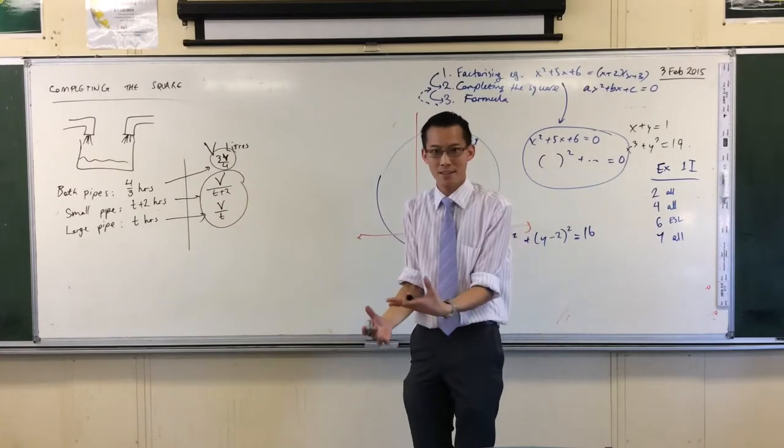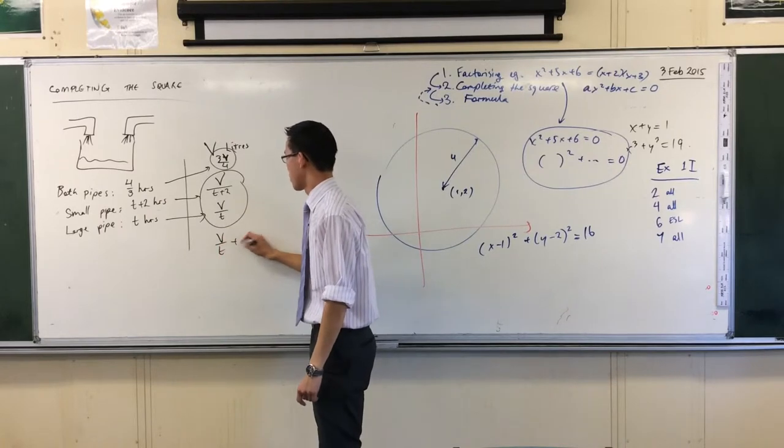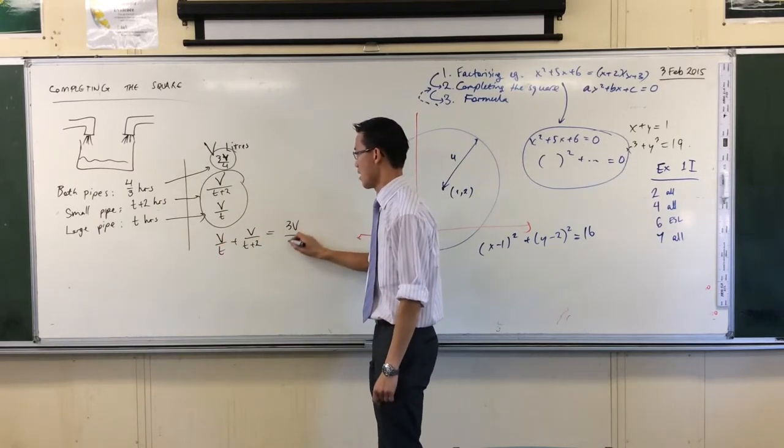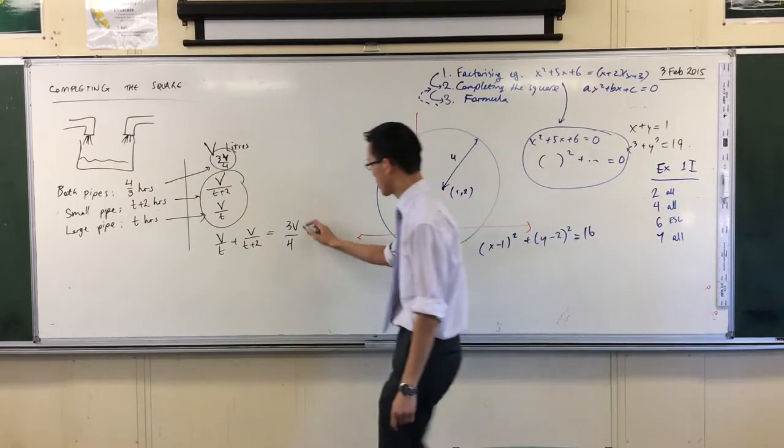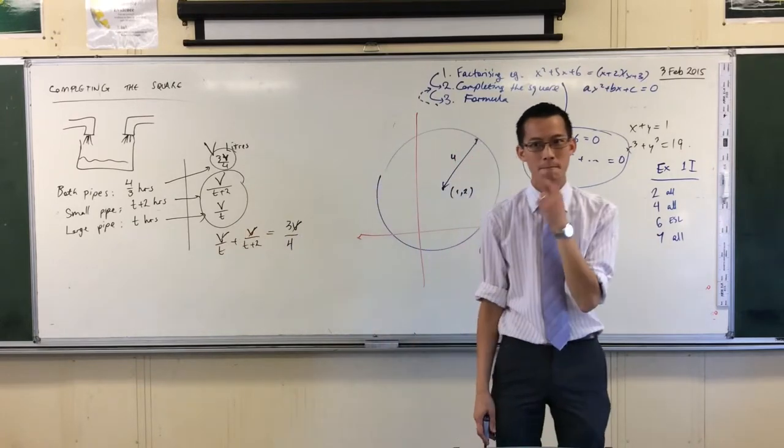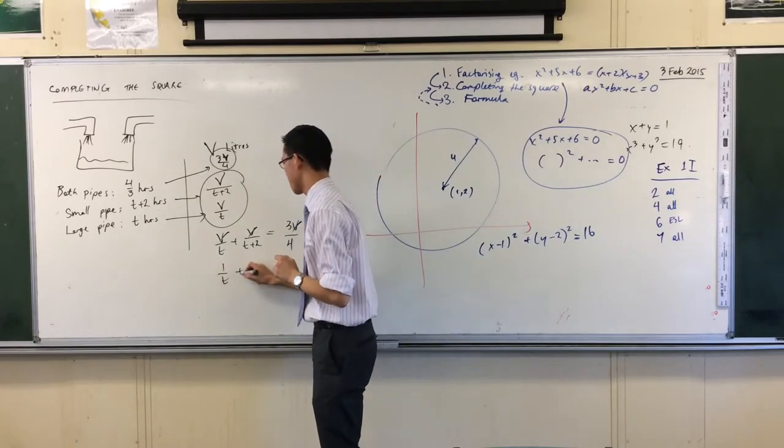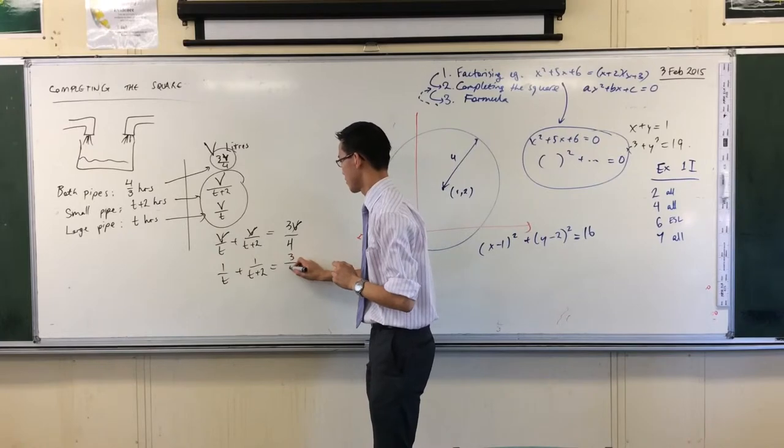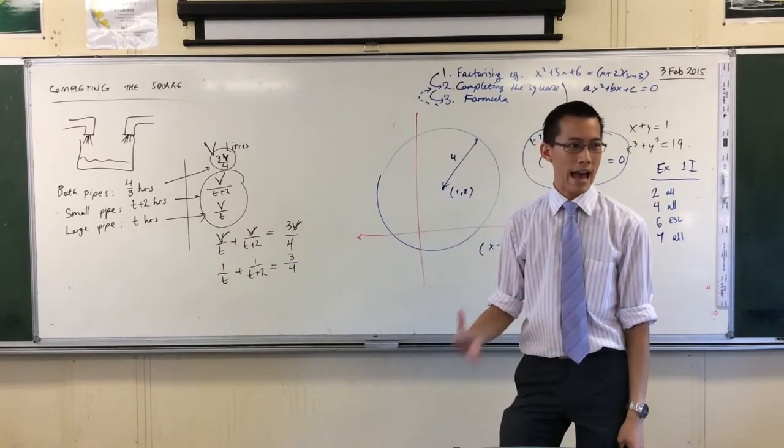It's what turning both of them on does. So V over T plus V over T plus 2 should be 3V on 4. And now you can see why it doesn't matter what the volume is because the question is the same irrespective of volume just like last time. So I've cancelled out all of my volumes. So now I have this. And now all I need to do is to convert this into the appropriate quadratic equation.